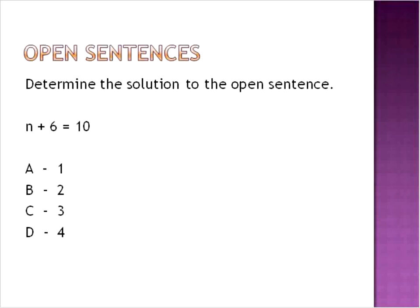The next type of question is open sentences. When you're given an open sentence like n plus 6 equals 10, we can easily do this in our head, but it's nice to know that one of these options is definitely going to be correct. So what we're going to do is substitute these values in for n, just like we would a replacement set. So we'd say 1 plus 6, 1 plus 6 is 7. 2 plus 6 is 8. 3 plus 6 is 9. 4 plus 6 is equal to 10. So that's going to be the correct solution for this open sentence.